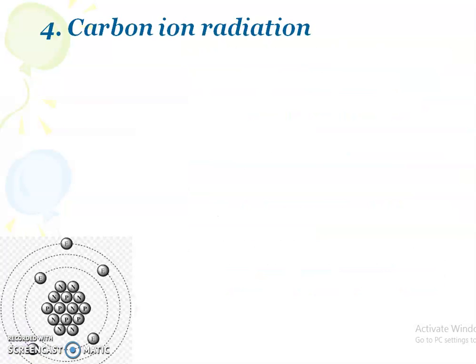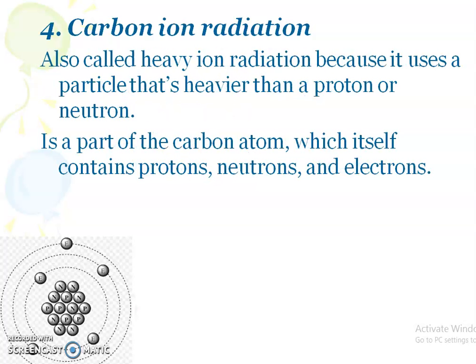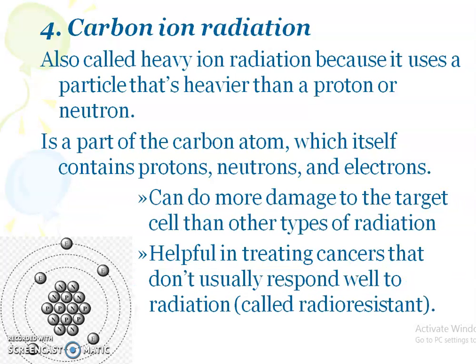The next category is carbon ion radiation, also called heavy ion radiation, because it uses a particle heavier than a proton or a neutron. A carbon ion is part of a carbon atom and itself contains protons, neutrons, and electrons. Carbon ions can cause more damage to target cells because they are heavier. They are used to treat cancers that are radioresistant, meaning cancers that do not respond well to other types of radiation.